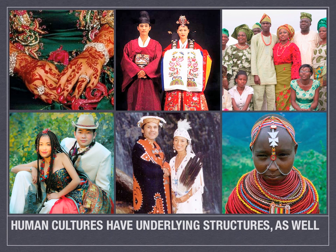We talked about underlying structures in language — in English, all sentences have subject and predicate — and we've seen it in stories with the hero quest. Well, here's where structuralists love to go: human cultures have these underlying structures as well. There are six pictures in front of you — all pictures from wedding ceremonies around the world. Starting in the upper left with the hands, I believe that's from India. To the right, the couple — I believe that's Korean.